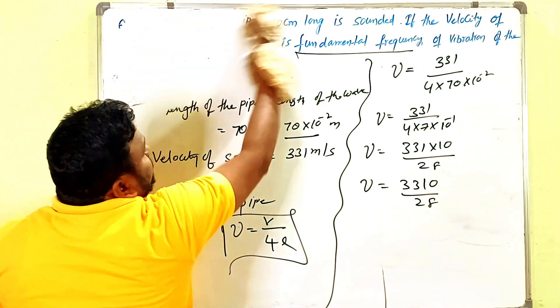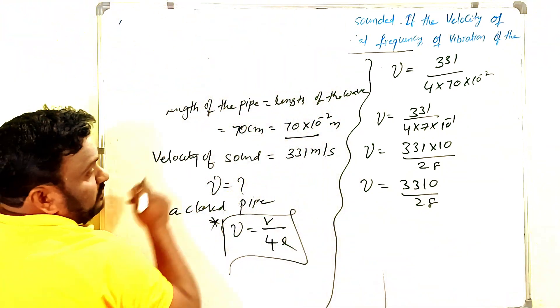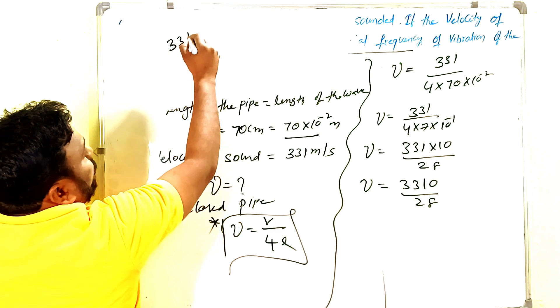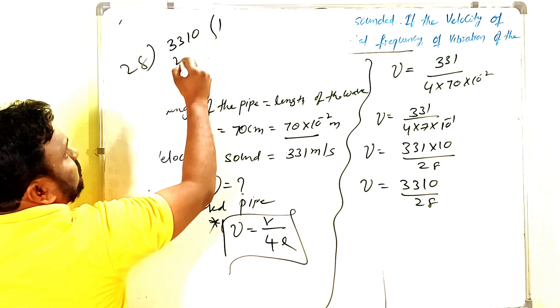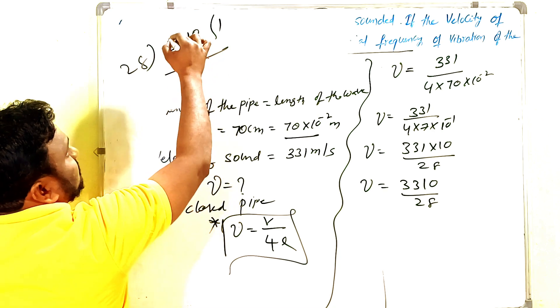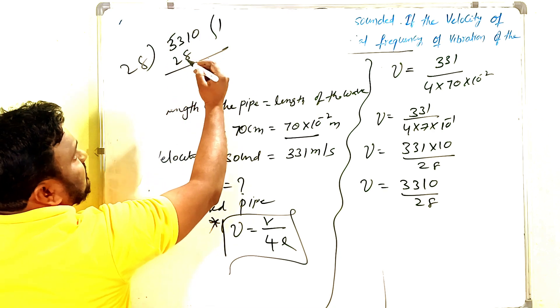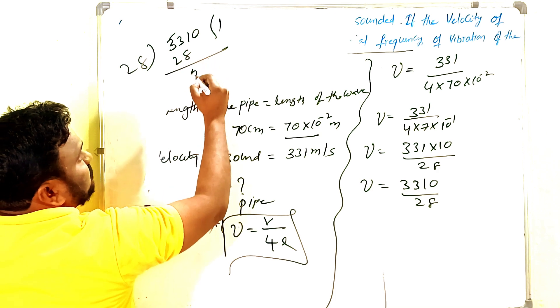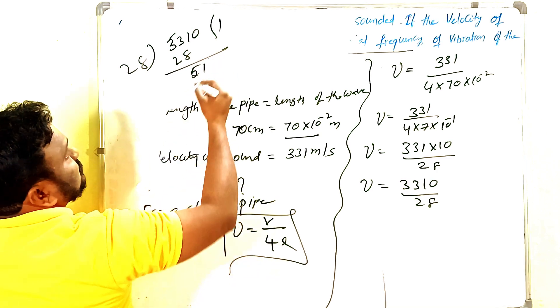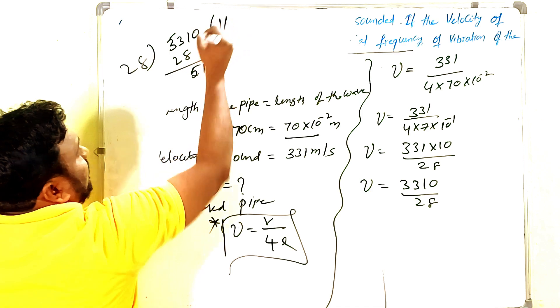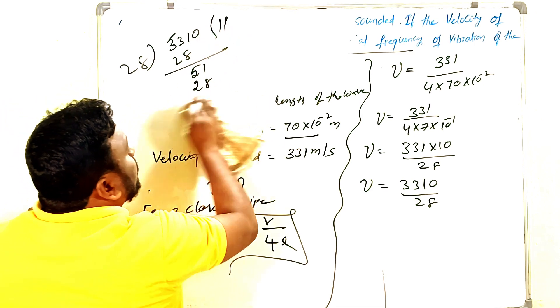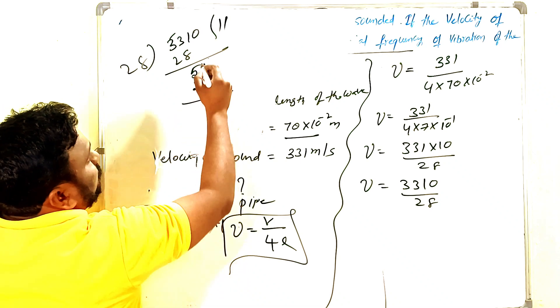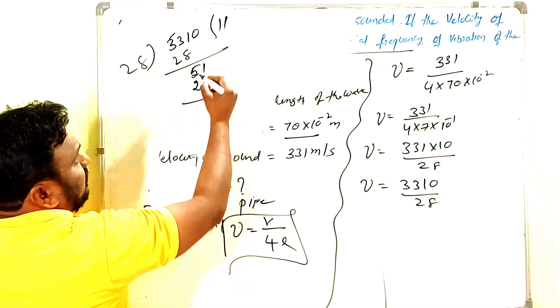3310 divided by 28. 28 ones are 28. 33 minus 28 is 5. Bring down 1, that's 51. 51 minus 28 is 23. Then what do you have? 11, 3, and 4.